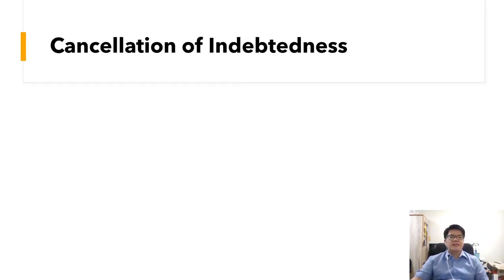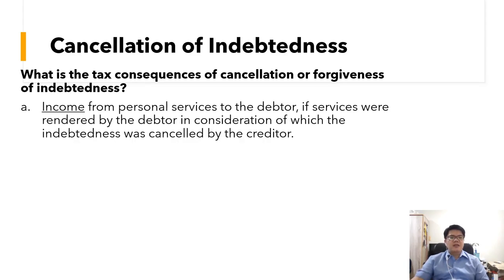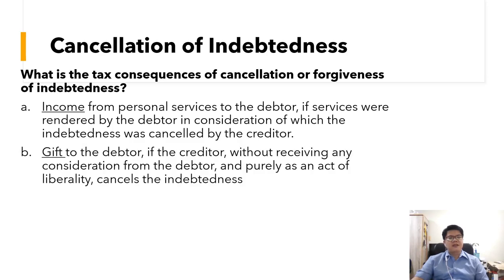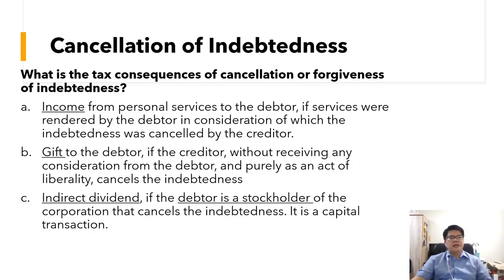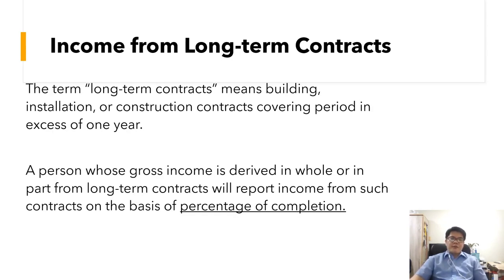Regarding cancellation of indebtedness: it may be income from personal services if services were rendered by the debtor in consideration of which the indebtedness was cancelled. It may be a gift if the creditor cancels the debt without any consideration as a purely act of liberality. It may be an indirect dividend if the debtor is a stockholder of the corporation that cancels the indebtedness, or it may be a capital transaction. Interest income is not taxable if exempt, such as in government bonds, or is subject to final tax, such as interest on bank deposits.